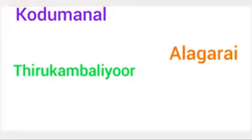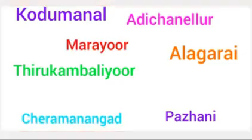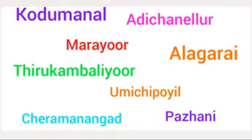Many megalithic monuments have been found from different parts of South India. Kodumanal, Alagare, Tirukamballi, Palani, Adichanallur, Cheramannangada, Marayur, and Umichipoil are the major places among them.